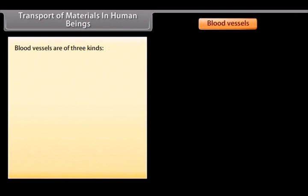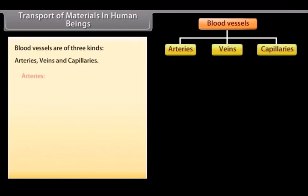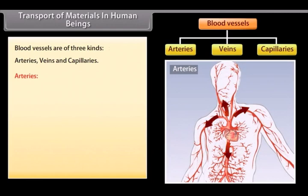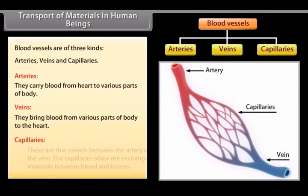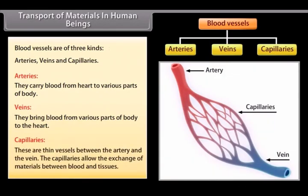Blood vessels are of three kinds: arteries, veins and capillaries. Arteries carry blood from heart to various parts of the body. Veins bring blood from various parts of the body to the heart. Capillaries are thin vessels between the artery and the vein. The capillaries allow the exchange of materials between blood and tissues.